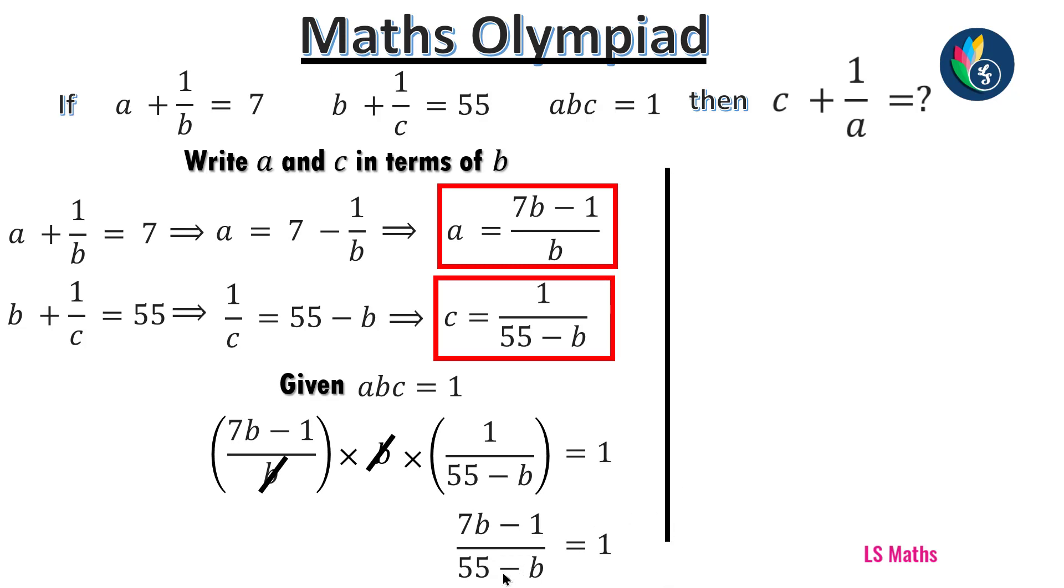Next step, upon cross multiplication, we get 7B minus 1 equals 55 minus B. Next, we take this B here, so 7B plus B equals 55 plus 1. Now 8B equals 56, so B equals 56 by 8. We can simplify this further, so B equals 7. Now we keep these three boxes and proceed.